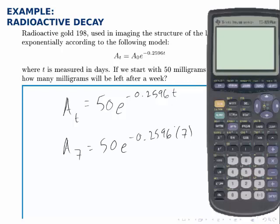In the calculator, I'll start by simplifying the exponent, so negative 0.2596 times 7, then raise E to that answer, and then multiply that answer times 50. So I do the exponent first, and then the multiplication, following order of operations.